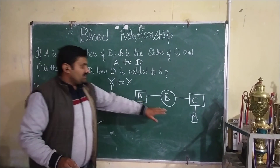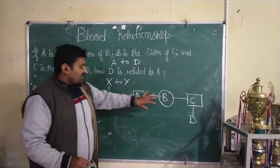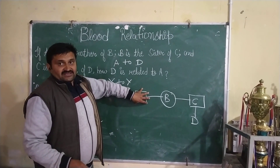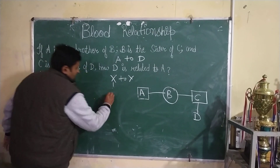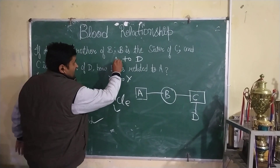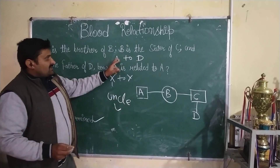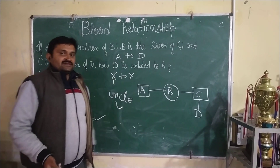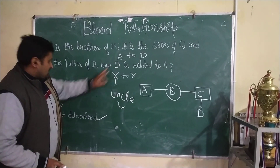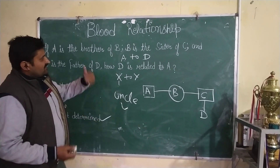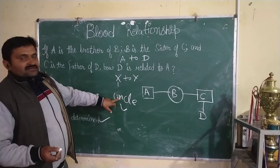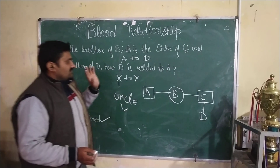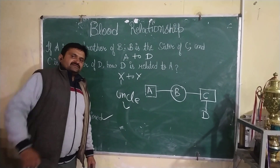Let's go to A. So A is related to D. If we determine how B is related to D, then A should be the uncle of D. So the answer will come out. Please subscribe to this channel.